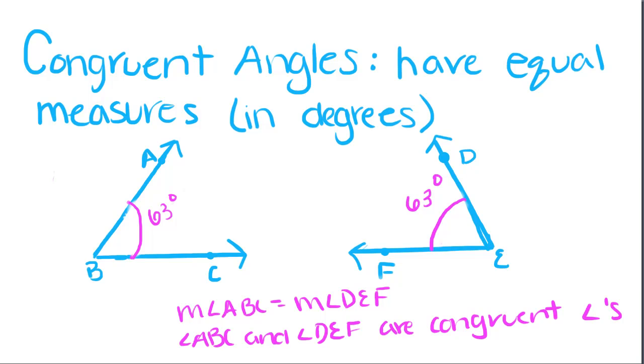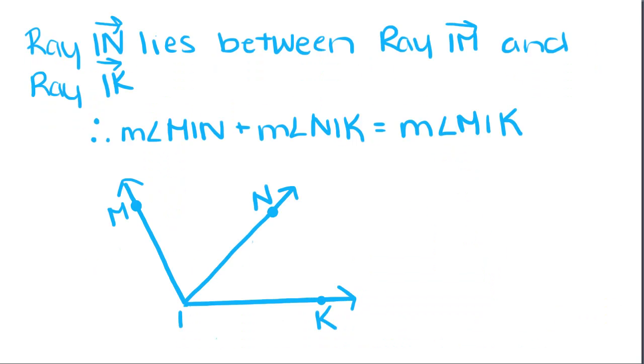Okay, so now that we know that, we're going to go on to something else, which is called the addition property of angles. So, we have ray IN, which is this one-directional line right here, and it lies between ray IM and ray IK. So that means that the measure of angle MIN plus the measure of angle NIK equals the measure of this entire angle, which makes sense because if you add up the parts of something, you're going to get the total of the whole.